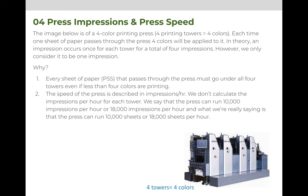Why? First, every sheet of paper that passes through the press must go under all four of the towers, even if we're only printing one of the towers, so that when we talk about the speed of the press or the impressions per hour the press can print, it's based on assuming all the towers are on. And second, it makes it more complicated to try to calculate based on four towers. So when we talk about the speed, we simply say if it prints 18,000 impressions per hour, what it's basically saying is it can print 18,000 sheets per hour. If it's a two-color press, it means it can print 18,000 sheets and make two impressions on each sheet, but we're still just going to say it's 18,000 impressions per hour.